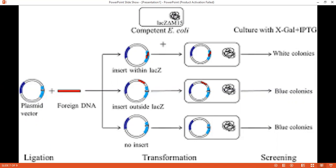In the ligation step, the plasmid vector is taken and it is added with the foreign DNA, and then the foreign DNA is transformed. If the foreign DNA is inserted within the lacZ gene, then we will have white colonies. If the foreign DNA is inserted outside the lacZ gene, we have blue colonies. And if foreign DNA is not inserted at all, then there will also be blue colonies.